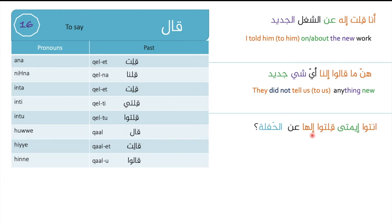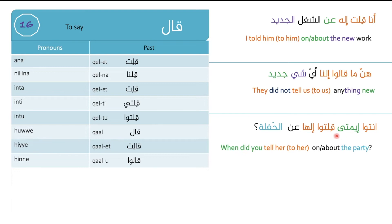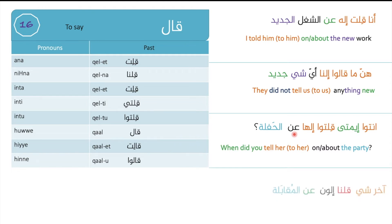Third example: entu, amta l-toolu haa an al-hafla? — When did you tell her about the party? The phrase l-toolu haa means 'you told her', and an al-hafla means 'about the party'.